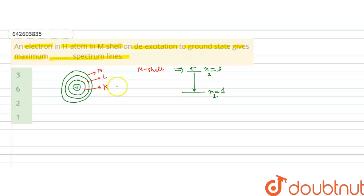So number of spectral lines, these are calculated by the formula: n2 minus n1 into n2 minus n1 plus 1, divided by 2.